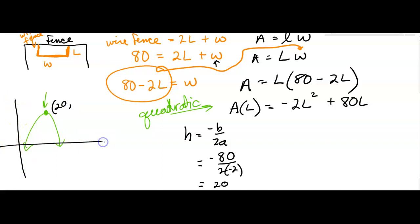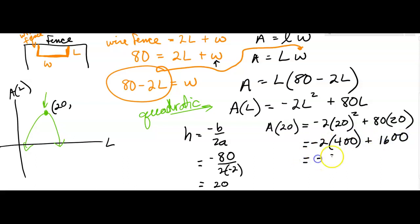That tells me then that this vertex is occurring at 20 comma what? If you think about graphing this, this is your length and this is your area up here, and we're trying to maximize the area. So we know it's going to occur when we have 20 feet for the length of that fence. Now I have to figure out the area though, so I need to find the area at 20 feet when L is 20. That's going to be negative 2 times 400, that's negative 800, plus 1600.